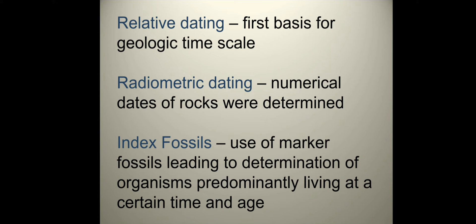For example, radiocarbon dating for organic remains could date up to 60,000 years. Next is index fossils. It is the use of marker fossils leading to the determination of organisms predominantly living at a certain time and age. They make use of fossils of organisms that are predominantly living at a certain time and age, deposited in sedimentary layers of rocks.